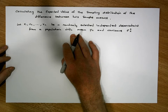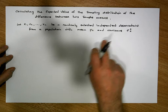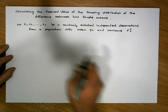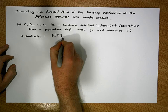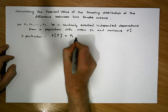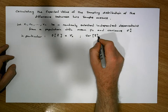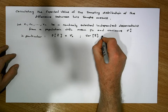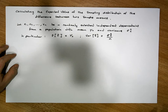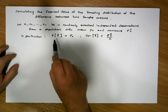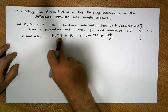What we know from a previous video is that we've calculated the expected value and the variance of the sampling distribution for the sample mean of these random selections. In particular, we've shown that the expected value of the sample mean equals the population mean, and the variance of the sample mean equals the population variance divided by n.